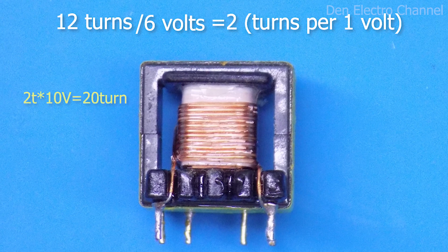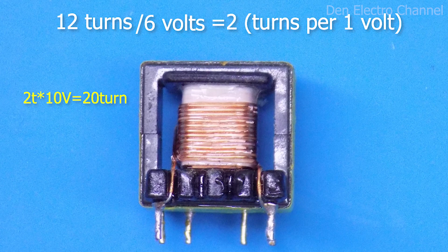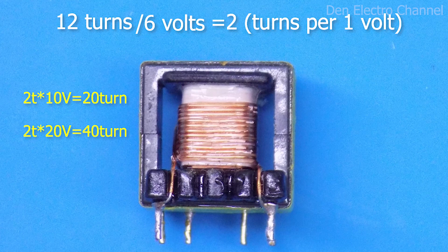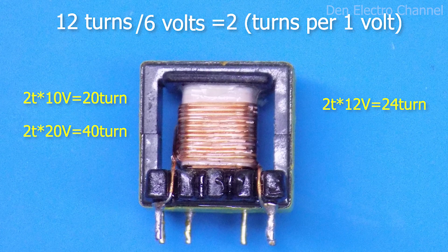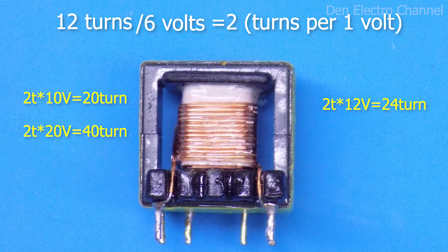If I want to make 10 volts at the output of the power supply, then I will take these 2 turns and multiply by 10. You will get 20 turns. And if I want to make 20 volts, then 2 will need to be multiplied by 20. The result will be 40 turns. But in this example I'll make it 12 volts. To do this I need to make 24 turns. But since I will leave the old secondary winding, I only need to make half, another 12 turns.